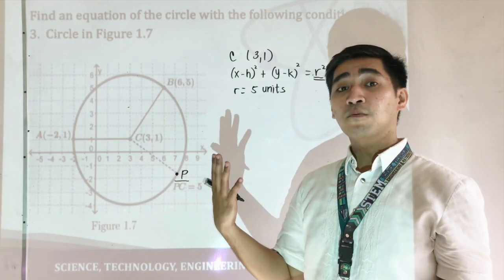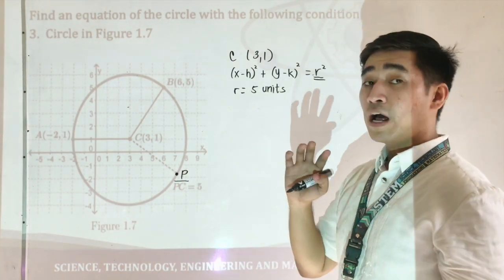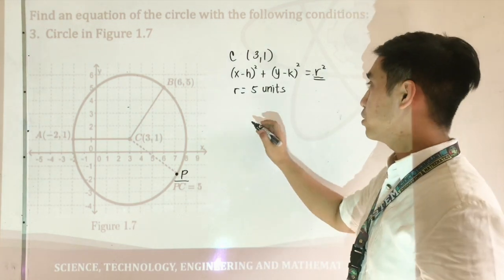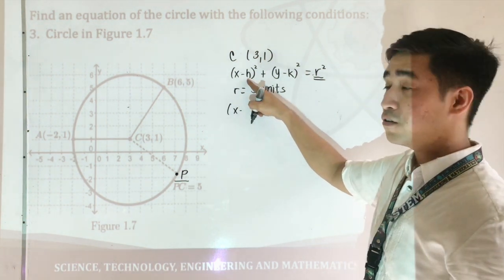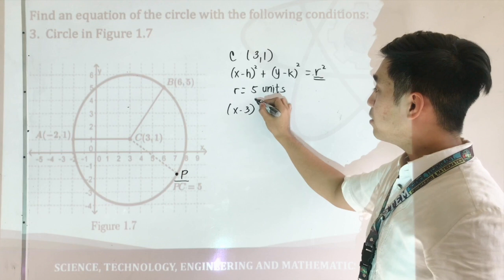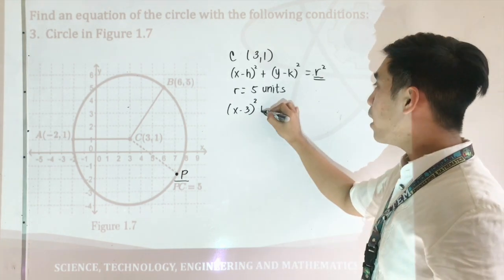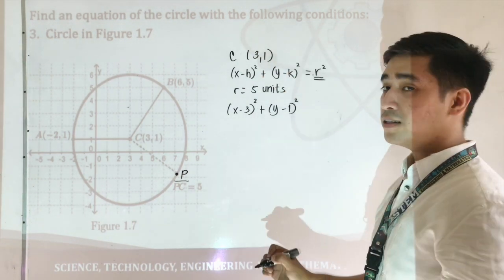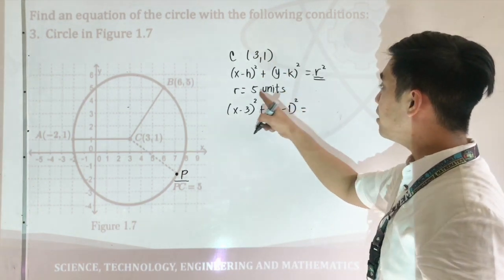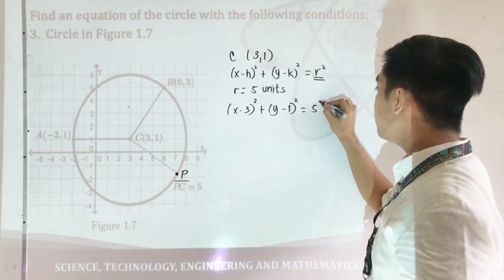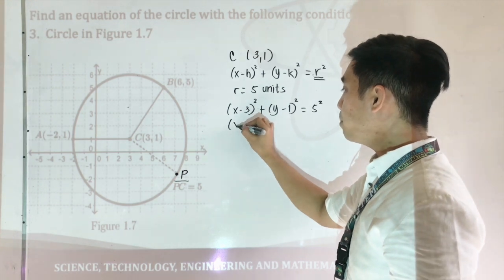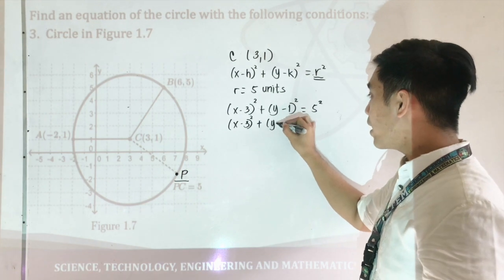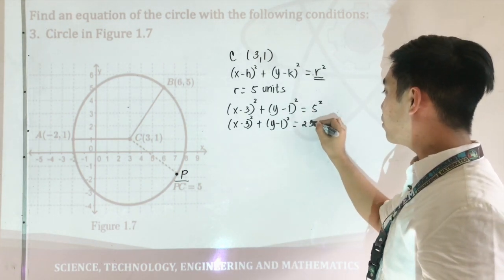We now have complete values. We will now be substituting the values of H, K, and R into the equation. We will be having X minus H, where H is 3, so X minus 3 quantity squared, plus Y minus K, where K is equal to 1, so Y minus 1 quantity squared, is equal to R squared, where R is 5, so 5 squared. Therefore, simplifying, we'll be having X minus 3 quantity squared plus Y minus 1 quantity squared is equal to 25.